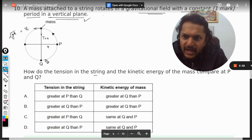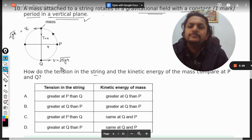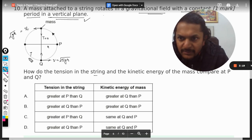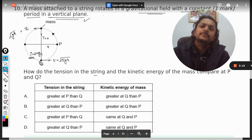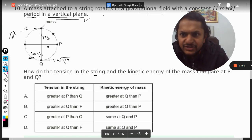At the bottom, the velocity becomes √(5gr). If you can remember these formulas, just remember them. The tension here becomes maximum, equal to 6 times mg, and at the top the tension is zero, which is minimum.